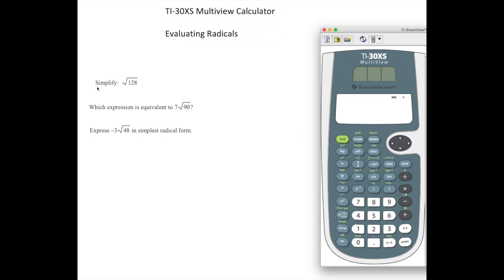So our first question says simplify the square root of 128. So to enter that into the calculator we first press 2nd and then the x squared button. Notice that on your calculator you're going to see the square root function.